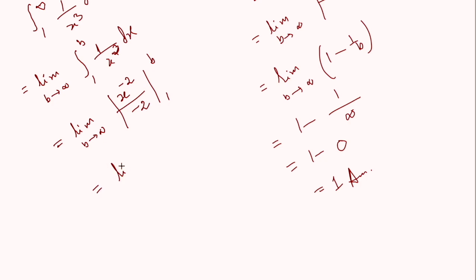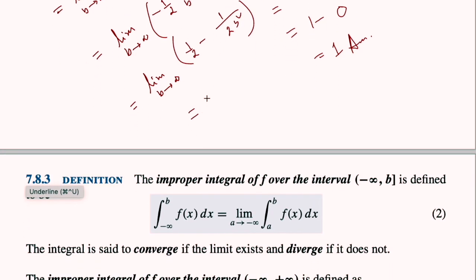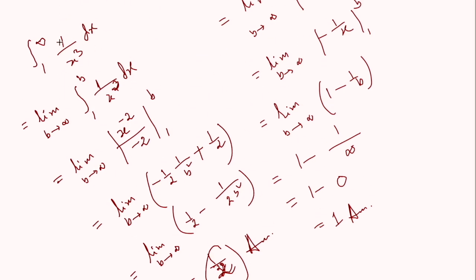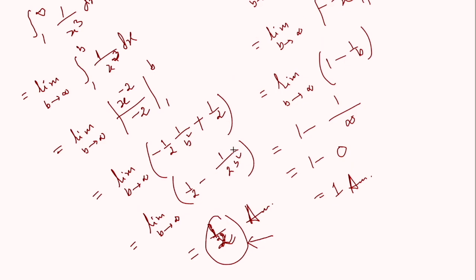This equals the limit as b tends to infinity. Putting in the upper limit b gives −(1/2)(1/b²), and putting in the lower limit 1 gives −1/2, so minus a negative gives plus 1/2. The result simplifies to: limit as b tends to infinity of [−1/(2b²) + 1/2]. Replacing b by infinity, 1/b² → 0, so the result is 1/2. Since the limit exists, the integral converges to 1/2, which is the value of this integral.